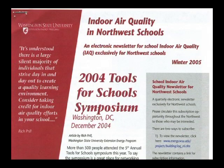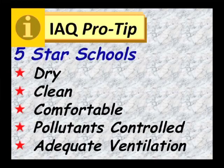Provide administrators and staff with methods for staying informed regarding indoor air quality issues: newsletters, websites, listservs, etc. We hope you enjoyed your virtual school walkthrough today and want to remind you of the five basic objectives of a healthy school: keep it dry, clean, comfortable, control the pollutants we've discussed, and provide enough outside air ventilation year round to keep things fresh.